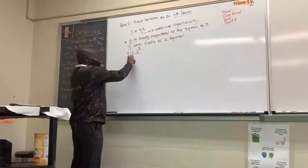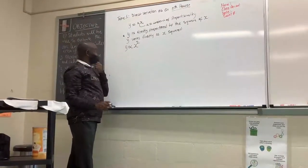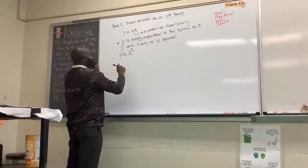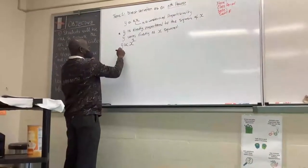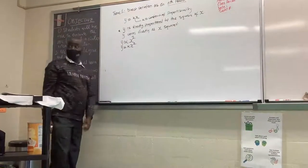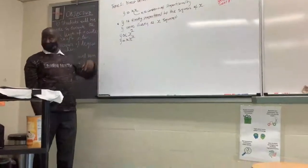Now for you to remove this sign of proportionality, you have to introduce constant of proportionality. So you can say that y is equal to kx squared, where k is a constant.